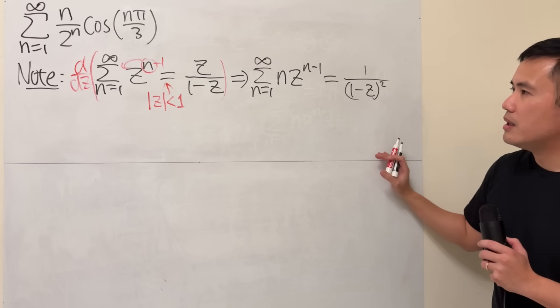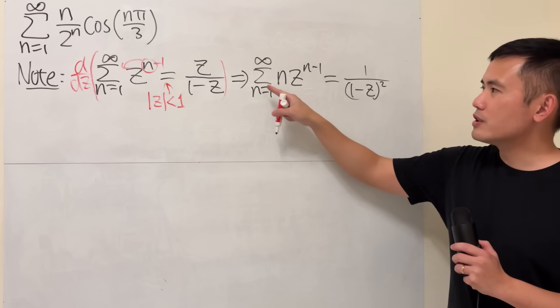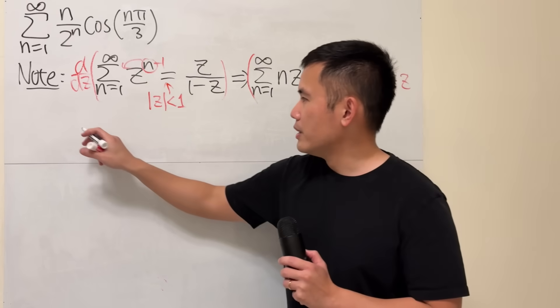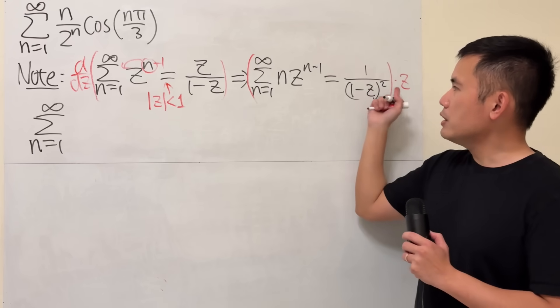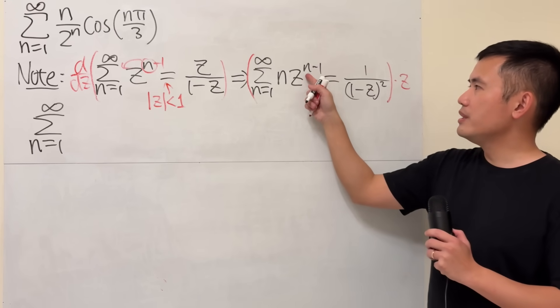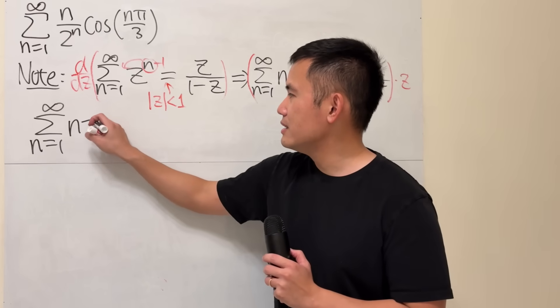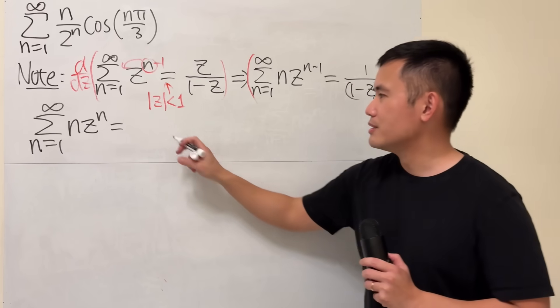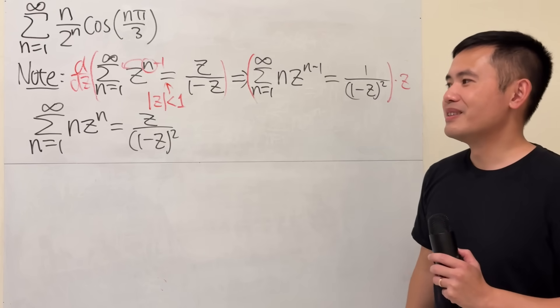Let's fix this a little bit because we just want n, not n minus 1. So I will just multiply both sides by z. Ladies and gentlemen, we get the formula. The sum as n going from 1 to infinity, when we multiply by z, it's just z to the n minus 1 times z to the first power. Add the exponents, it's n z to the n. On the right-hand side, we put the z to the top, so that's z over 1 minus z squared.